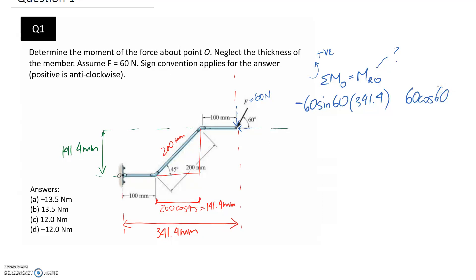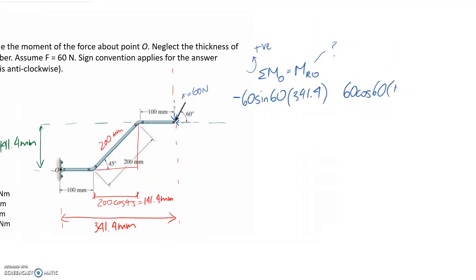Alright, so this is going to go in over here. Okay, so that's the force multiplied by the perpendicular distance. And then in terms of the direction, this horizontal force is going to try and push us anti-clockwise about point O. So that means it's going to go in as positive.